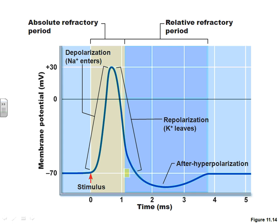Let's think about why we want this to happen. Do we want our neurons firing a signal when we're not ready? We don't want our nerves sending signals to our muscles telling them to contract when we don't want them to — we'd look pretty crazy with our muscles contracting all the time. So we need these built-in control systems: a time when it's impossible, then a time when it's a little bit harder.